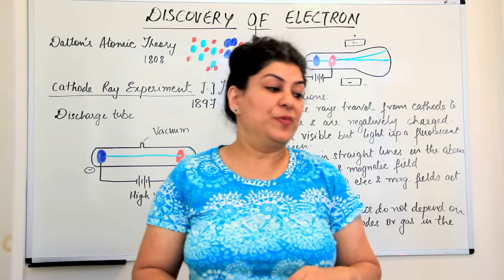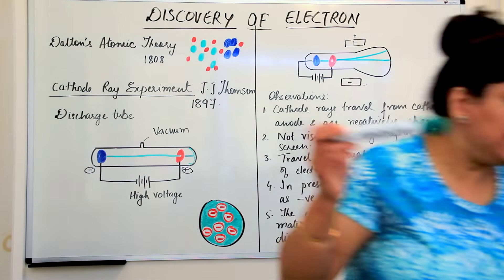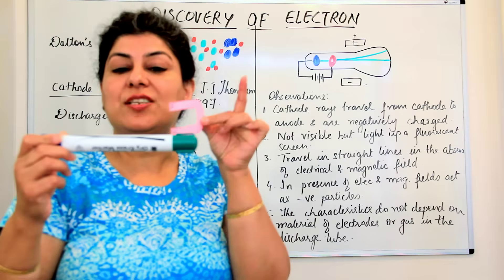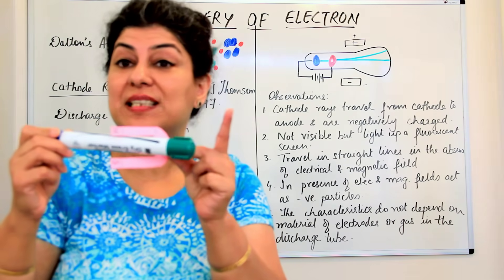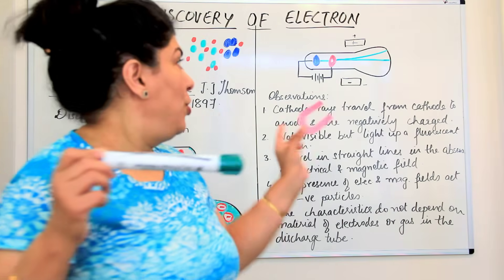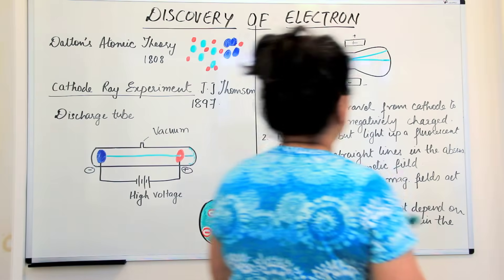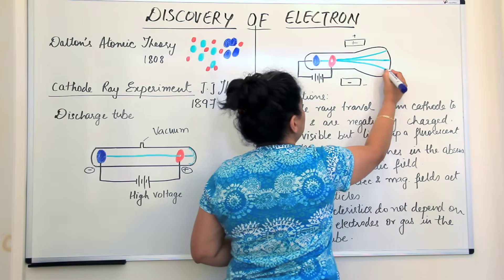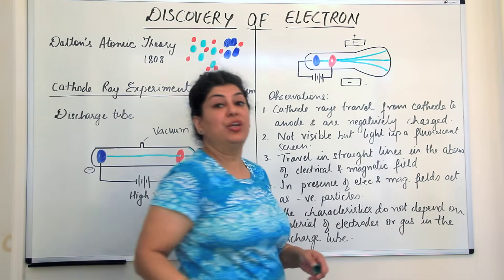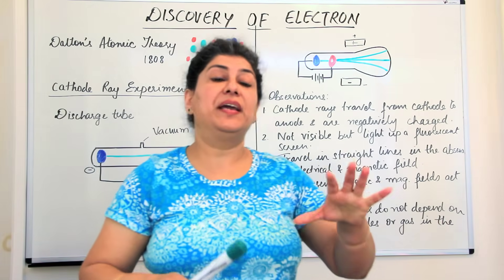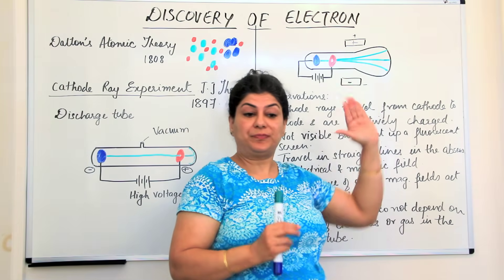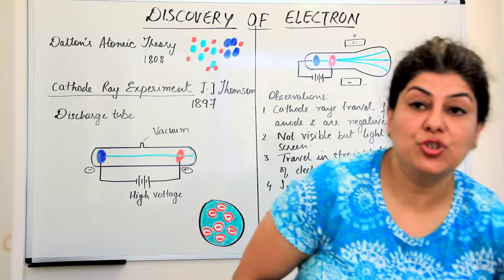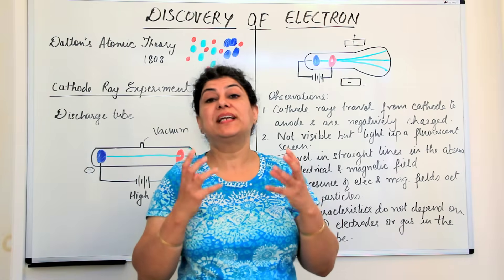He still wanted to make sure, so he subjected the discharge tube to a magnetic field instead of an electric field. When he did that, he again noticed that the cathode rays moved in the direction that would be expected of a negatively charged ray. The behavior of the cathode ray in the presence of both electrical and magnetic fields was consistent with that of negatively charged particles.